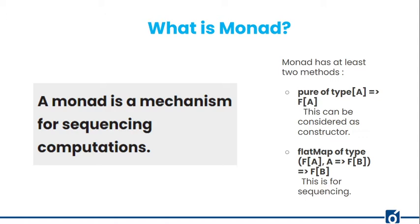Also, I figured out that every Monad has at least two methods. One is the pure method and the other is flatMap. The pure method basically works as a constructor — it creates the object or value of a given data type. FlatMap is used for sequencing. If you know Scala, you must know about the apply method, and the apply method is the same as this pure method.